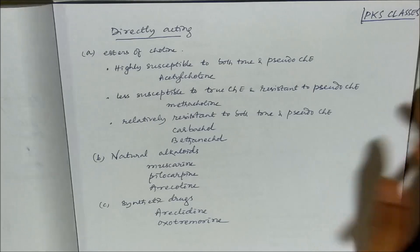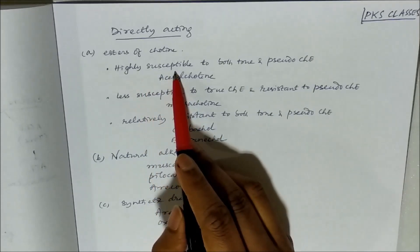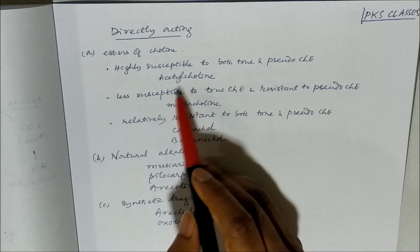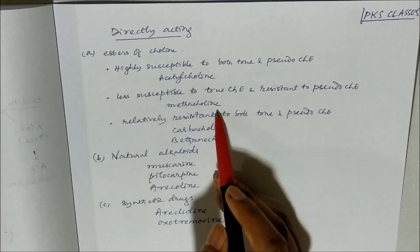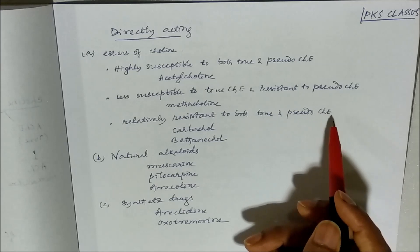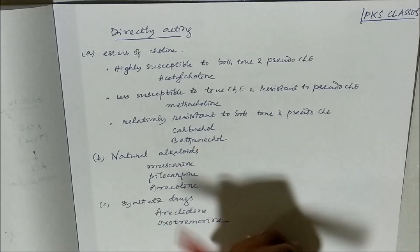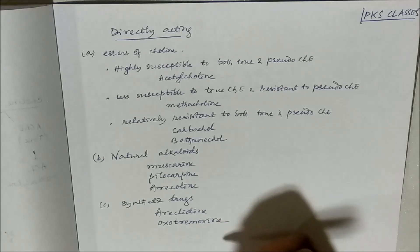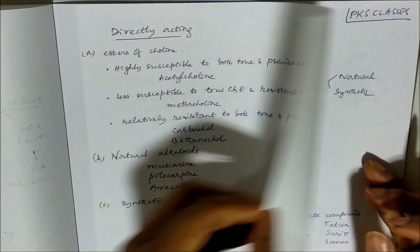Looking at the classification, directly acting cholinergic drugs can be classified as esters of choline. These esters can be subclassified as: highly susceptible to both acetylcholinesterase and butyrylcholinesterase (that is acetylcholine); less susceptible to true cholinesterase and resistant to pseudocholinesterase (that is methacholine); and relatively resistant to both (carbachol and bethanechol). We can also classify them as natural alkaloids - muscarine, pilocarpine, arecoline - and synthetic drugs like aceclidine and oxotremorine. These are all directly acting muscarinic agonists.